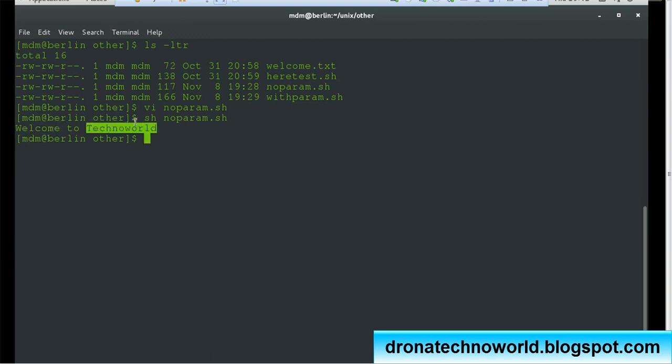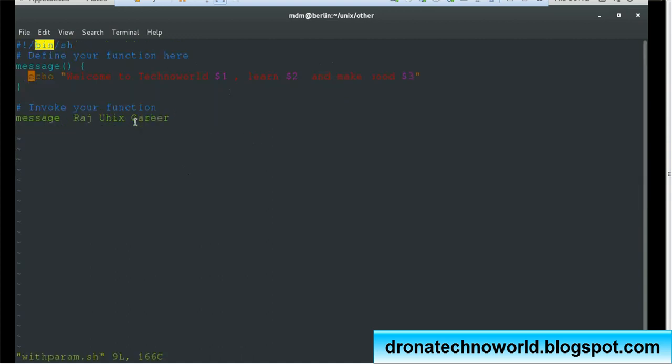On the same line, we wrote with_param shell script. In this script, we wrote the message function doing echo 'Welcome to Techno World' and the dollar one, which means it will pass the value Raj. So it will print 'Welcome to Techno World Raj, learn' then the second parameter 'Unix' will print Unix, 'and make good' and the third option 'career' will print.